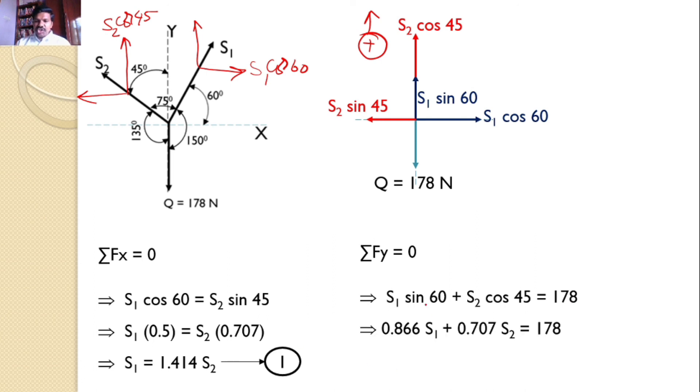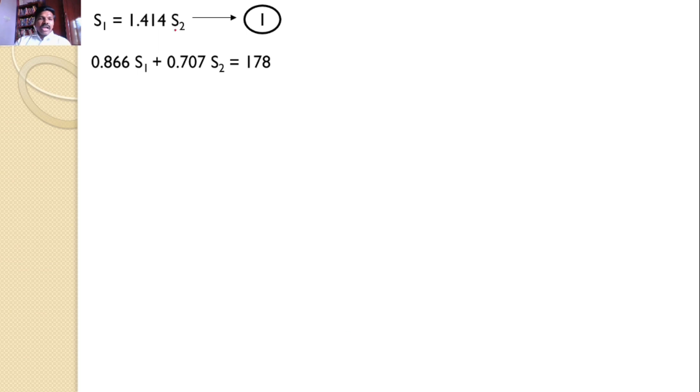Now, sin 60 and cos 45, I can substitute the corresponding values. Then I will get 0.866 S1 and 0.707 S2 equals 178. This is equation 1: S1 equals 1.414 S2. And this is equation 2: 0.866 S1 plus 0.707 S2 equals 178. By solving these two, substitute S1 value here.